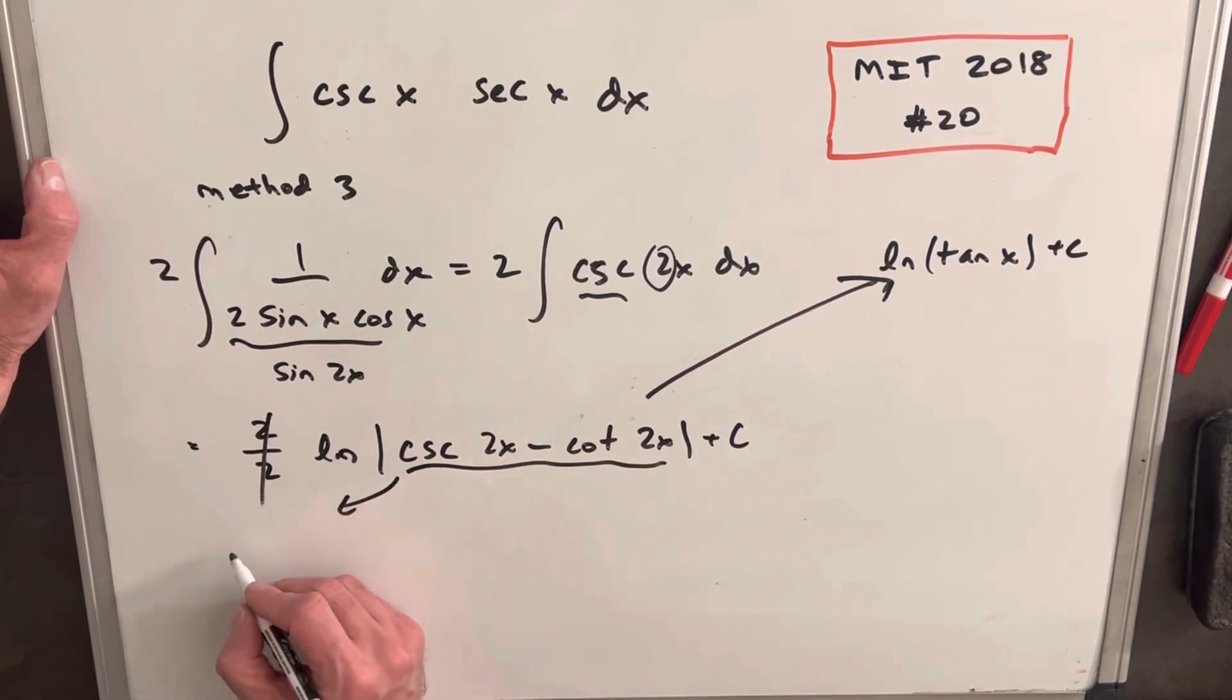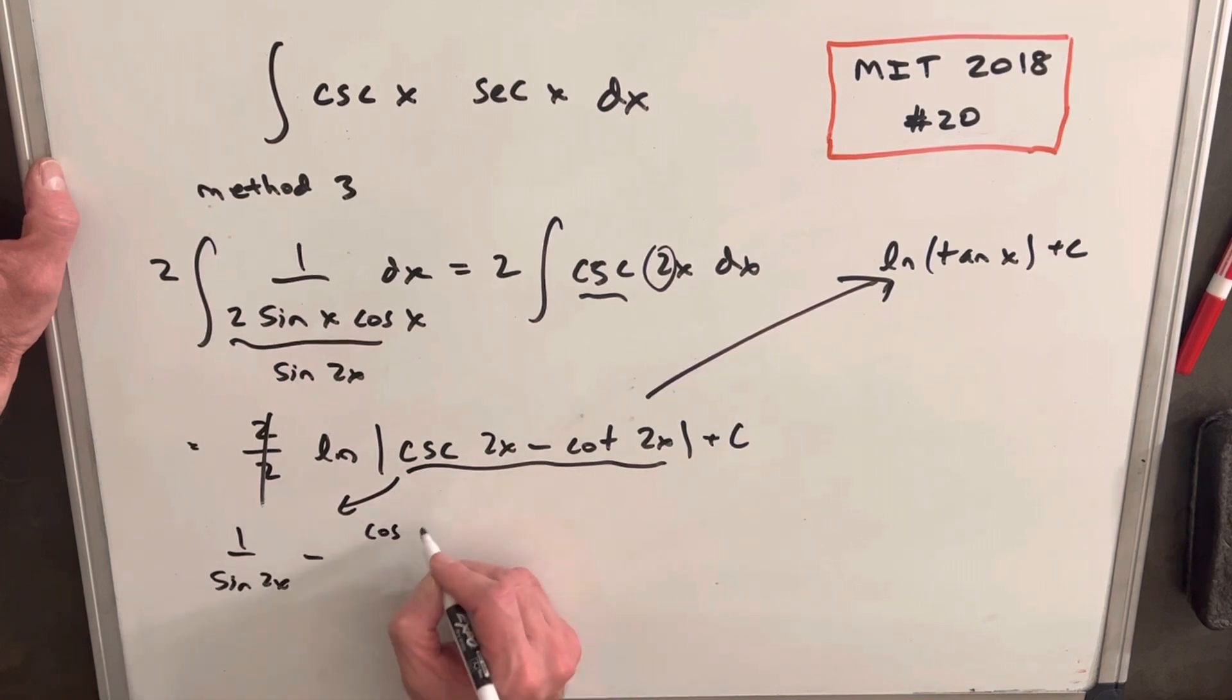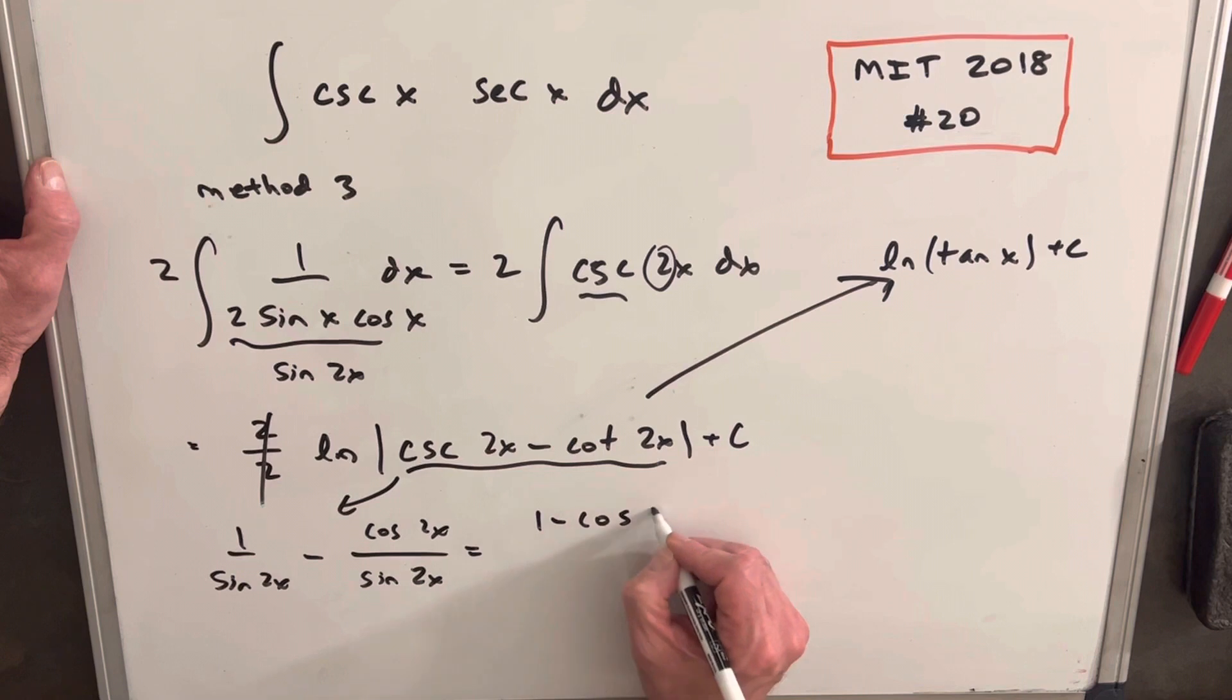Okay, so this thing is going to be the same as 1 over sine of 2x minus cotangent, which is cosine 2x over sine 2x. So we have the same denominator. So we can write this as 1 minus cosine 2x over sine 2x.